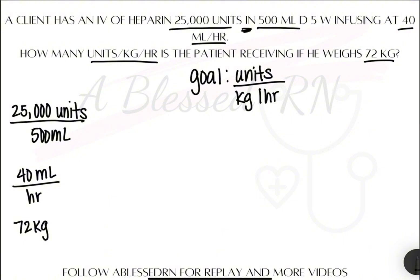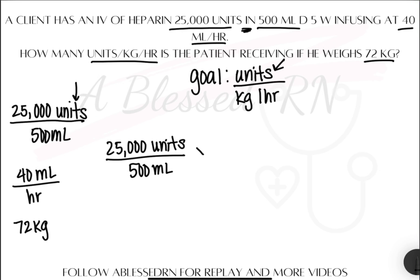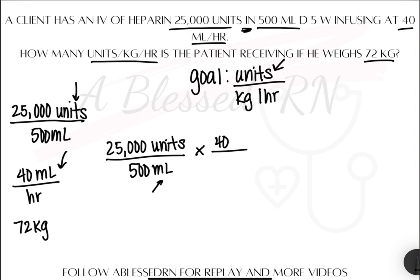We always start with what the goal tells us we are looking for, and that's the units — so it goes first on the top. This puzzle piece has our units, so it goes first on the top: 25,000 units over 500 milliliters. Now we have milliliters at the bottom, and it's not part of the goal, so it has to be canceled out. We need milliliters to go on top to cancel, so we'll use this next puzzle piece: 40 milliliters over hour.